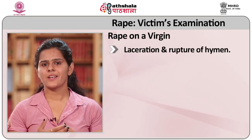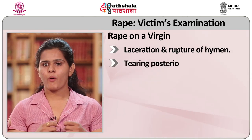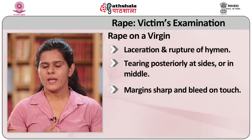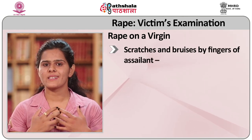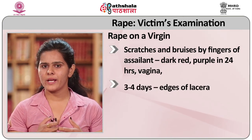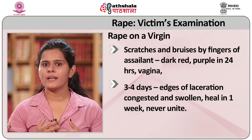Rape on a virgin: signs include laceration and rupture of the hymen. Tearing occurs posteriorly at sides or in the middle, with sharp margins that bleed on touch. Labia minora swell and are tender with scratches and bruises appearing dark red to purple within 24 hours. The vaginal area heals within one week and the lacerations never reunite.